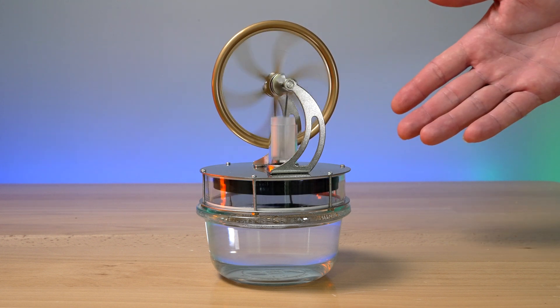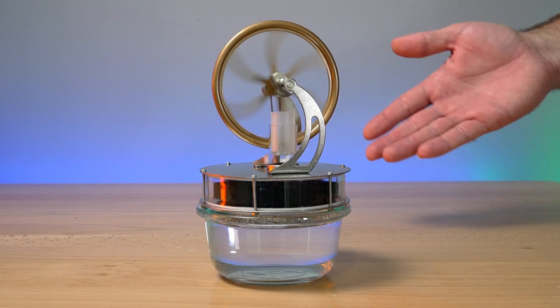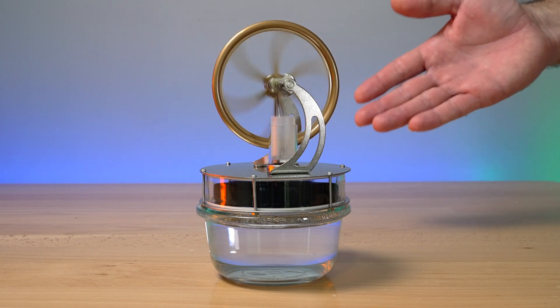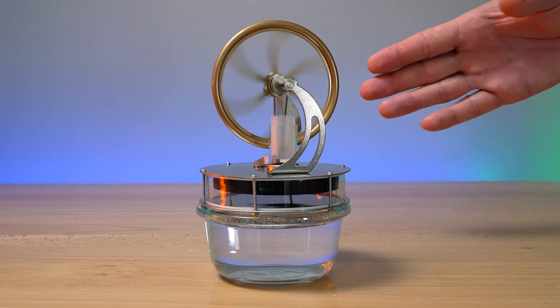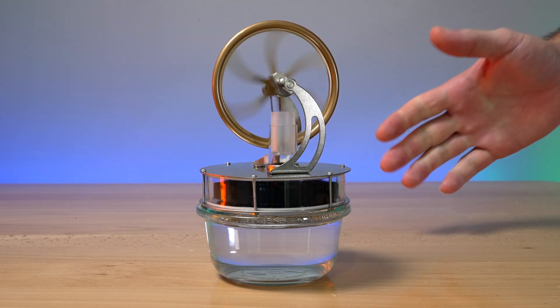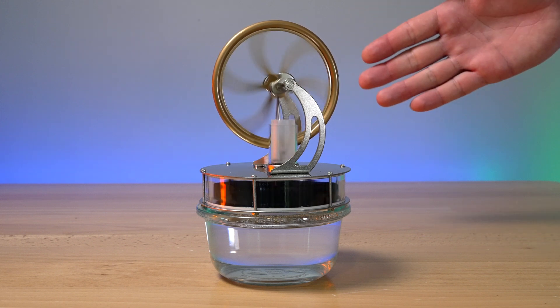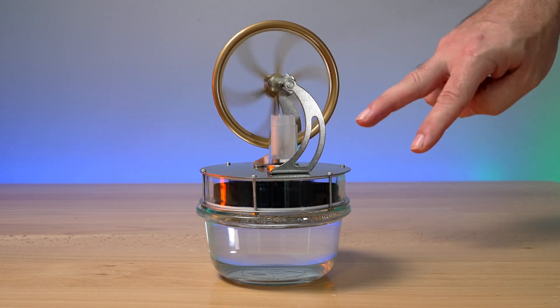So in any case guys, hopefully you enjoyed this little quick view of the low temperature sterling engine. You want to check out the other sterling engine I did, the hot air, that one's a little bit more interesting of the way it runs and how it operates. Check that out. And if you want to pick up this one for yourself, I'm going to have some links in the description. And if you like this video, then hit that like button. If you want to see more videos like this and other things I do on this channel, then stay tuned. And as always, thanks for watching and I'll catch you in the next one. Peace.